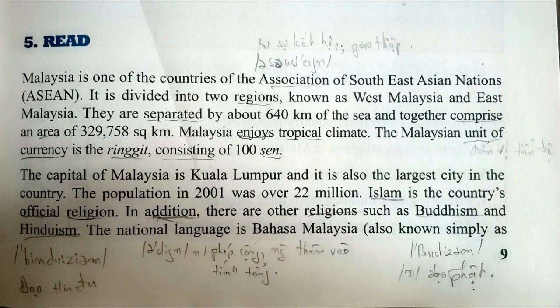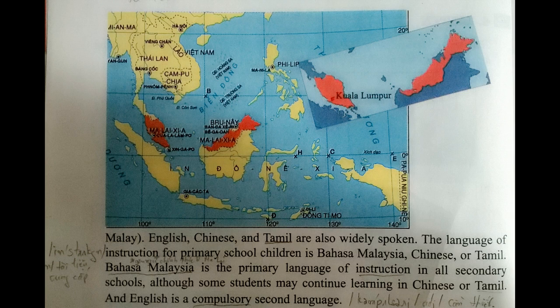Islam is the country's official religion. In addition, there are other religions such as Buddhism and Hinduism. The national language is Bahasa Malaysia, also known simply as Malay. English, Chinese, and Tamil are also widely spoken.